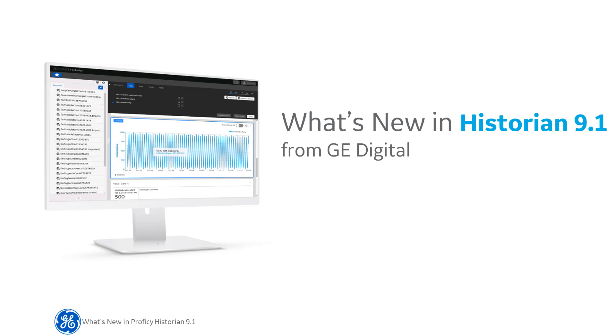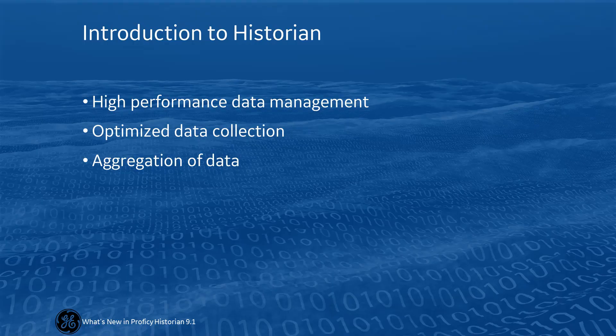We are delighted to announce that Historian 9.1 is released in July 2021. Historian is a high-performance data management software product with a 20-year legacy in optimizing collection and aggregation of time-based industrial data. Hi, I'm Swathi, an information developer at GE Digital.